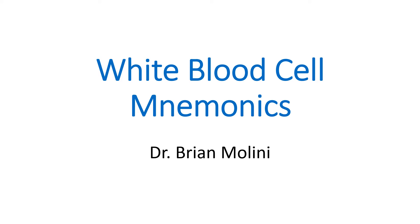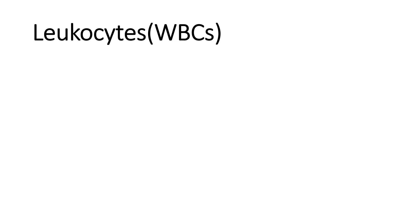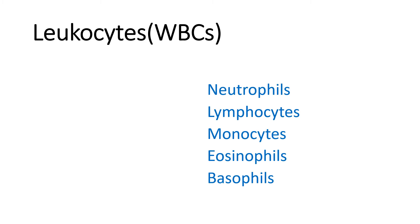Let's talk about white blood cells. As a student instructor, I've found these mnemonics to be the fastest way to learn the white blood cells. So these are your white blood cells, also known as leukocytes. You have your neutrophils, your lymphocytes, your monocytes, your eosinophils, and your basophils.